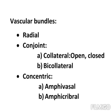First, we are going to learn about radial vascular bundles. In a radial vascular bundle, xylem and phloem are present in different radii, alternating with each other — one row of xylem, then phloem, then xylem, then phloem. Example: roots.